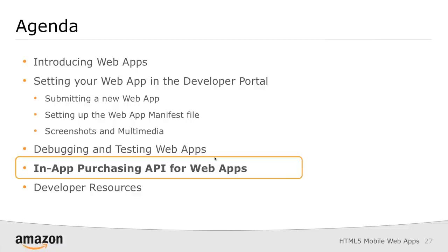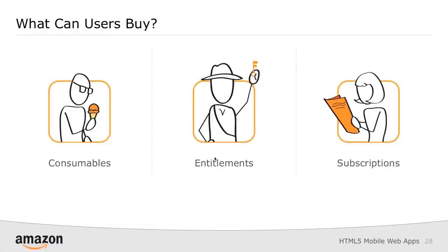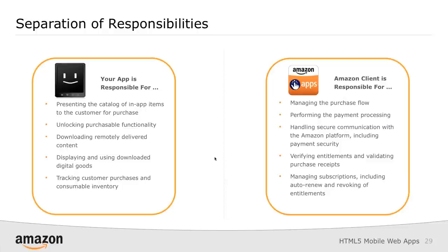Setting up a web app through the developer portal only takes a couple of minutes. We have it running on an actual device, tested it, and debugged it. Maybe we want to start monetizing through that web app through the Amazon App Store. Let's take a look at the in-app purchasing API for web apps. There are three things you can sell: consumables (think digital goods like power-ups or lives in your game), entitlements (something you buy once and have access across all your devices — like upgrading to a pro version that removes ads or gives unlimited use), and subscriptions (for consumable or media content, maybe in a magazine format).